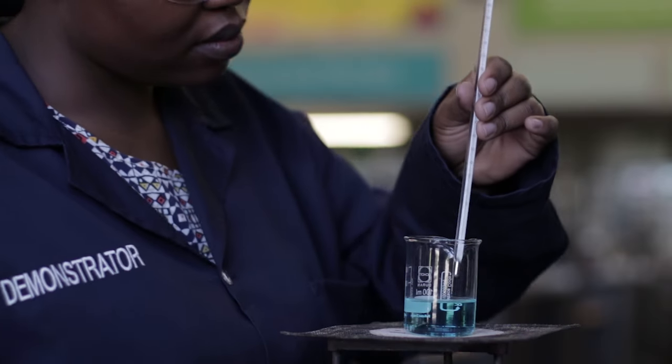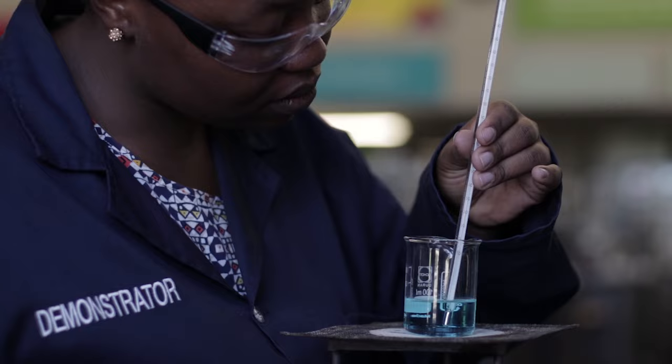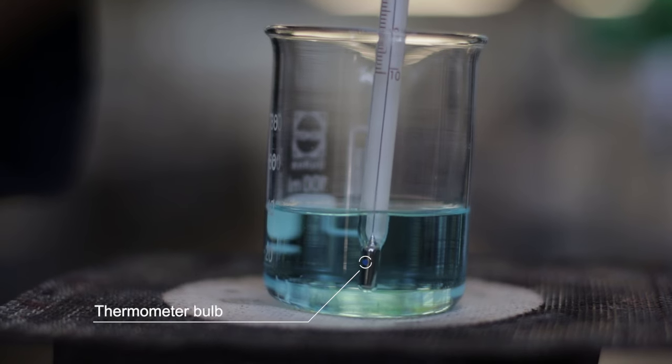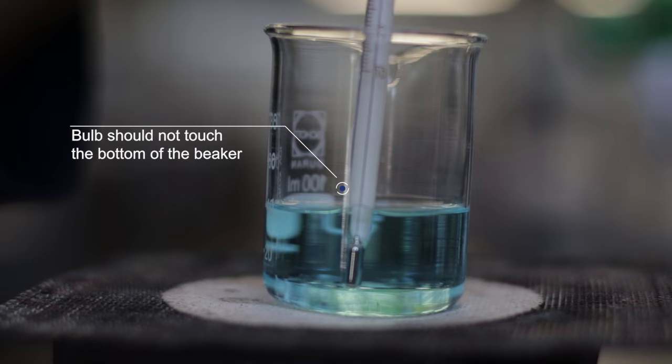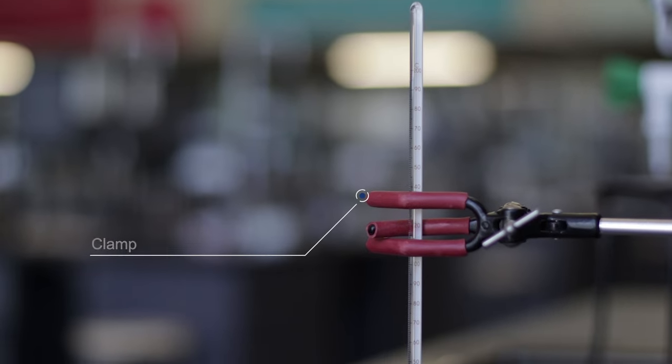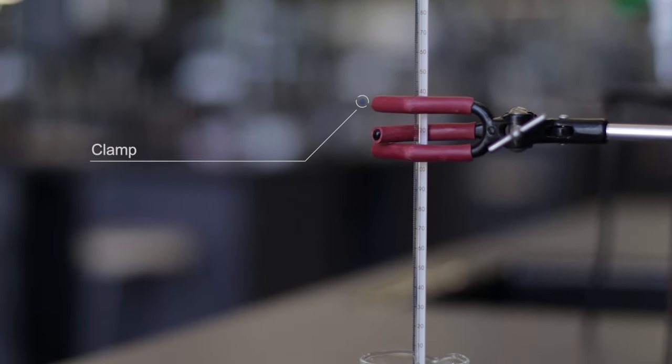A thermometer measures the temperature of a solution. The bulb of the thermometer should be immersed in the solution and the bulb should not touch the bottom of the glassware. If needed the thermometer can be secured with a clamp.